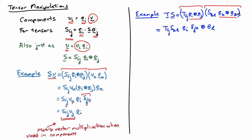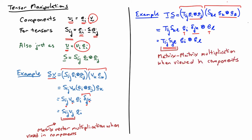We can do the same thing as before: move SKL up front with Tij, and then have EI outer product EJ acting on EK outer product EL. The two vectors that are next to each other interact by a dot product. Using the properties of the Kronecker delta to get rid of one subscript, we write that as Tij SJL EI outer product EL. Looking at just the component part, that's exactly the rule for matrix-matrix multiplication.